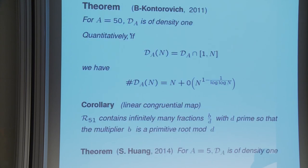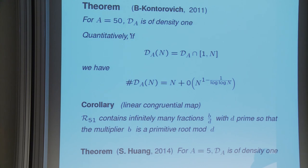What are the results? With Kontorovich, what we showed is that if we take A equals 50, the set D-A is a set of density 1, and even in a more quantitative form. Note this 1 over log log N factor, because we are using the thermodynamic method. This is the shortcoming that came from the zero-free region in the modular aspect, which is not quite uniform but slowly deteriorates. There is a chance one can do better and perhaps even get a power saving there.